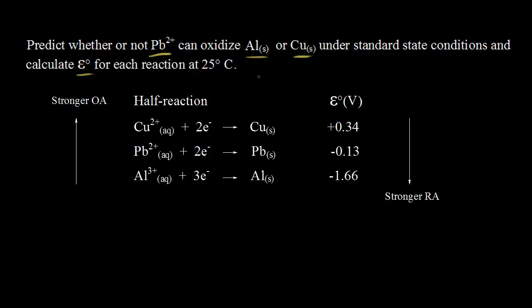We have a standard reduction potential table, a very shortened version of it, where we have our half-reactions written as reduction half-reactions on the left, and the standard reduction potentials for those half-reactions on the right, measured in volts.